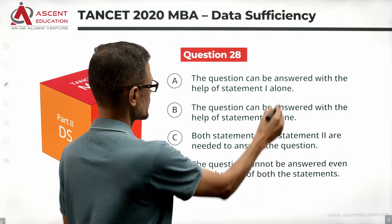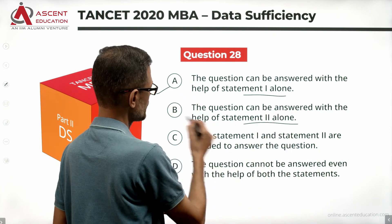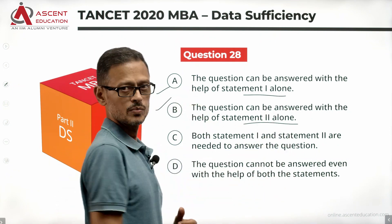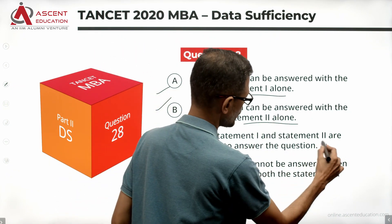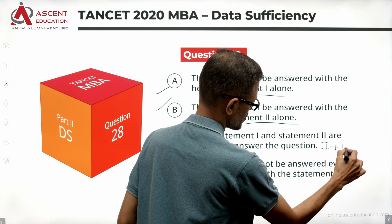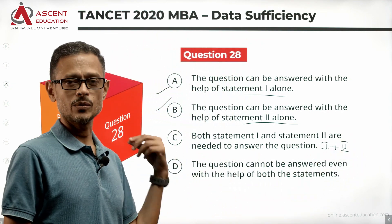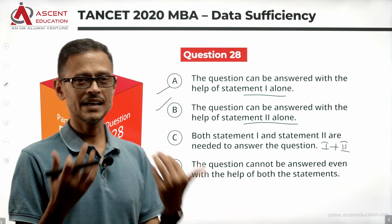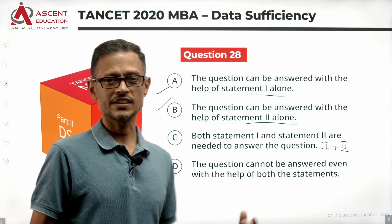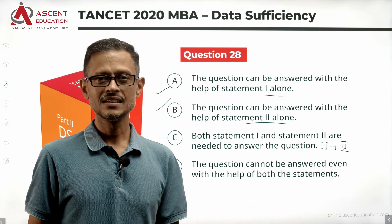Statement 1 alone is sufficient — answer option is A. Statement 2 alone is sufficient — answer option is B. Both statements together are sufficient — answer option is C. If the given data is not sufficient even combined, then the answer option is D.